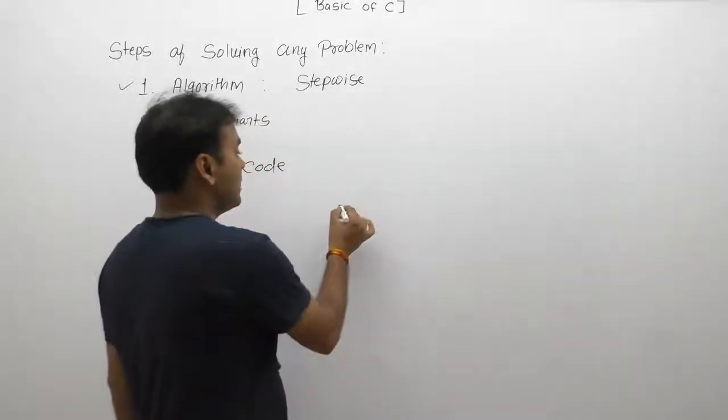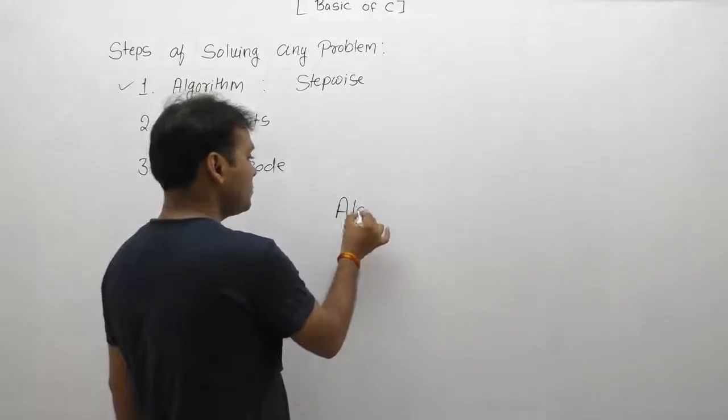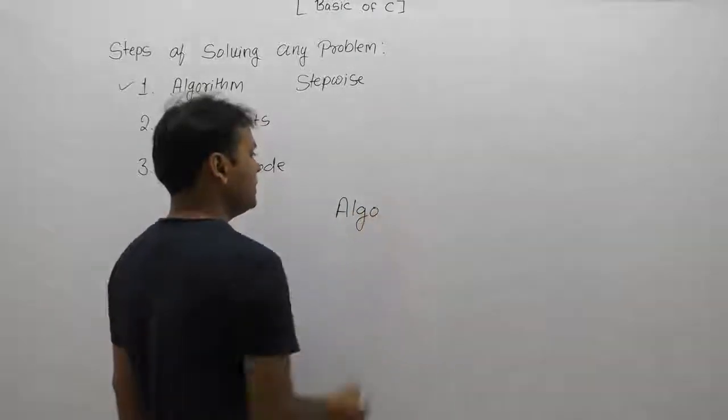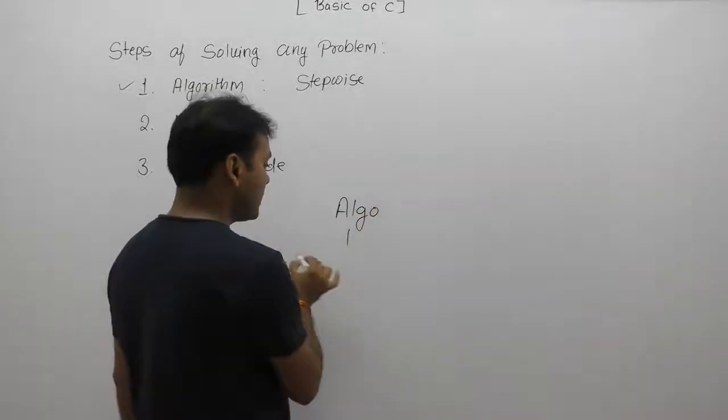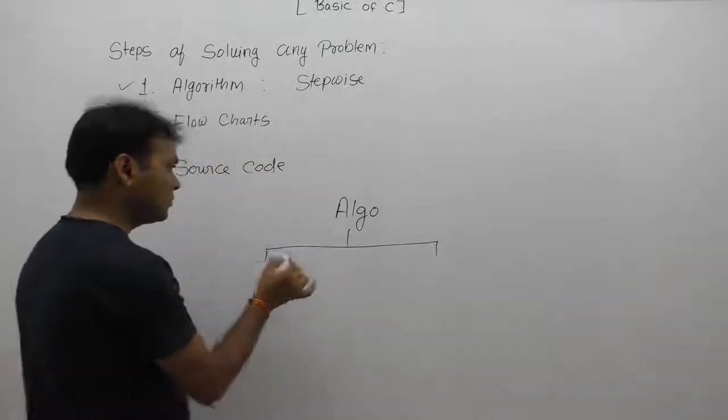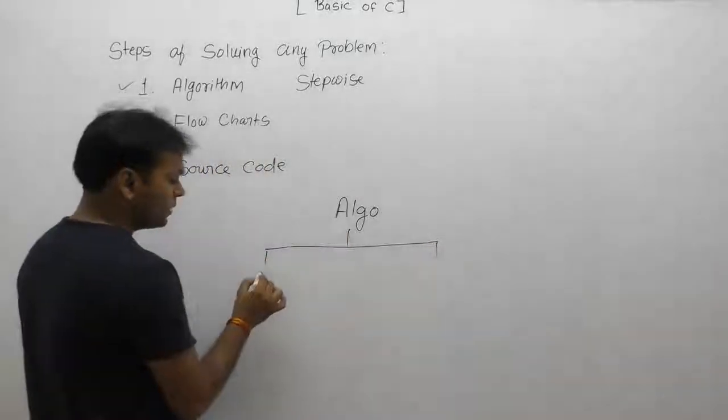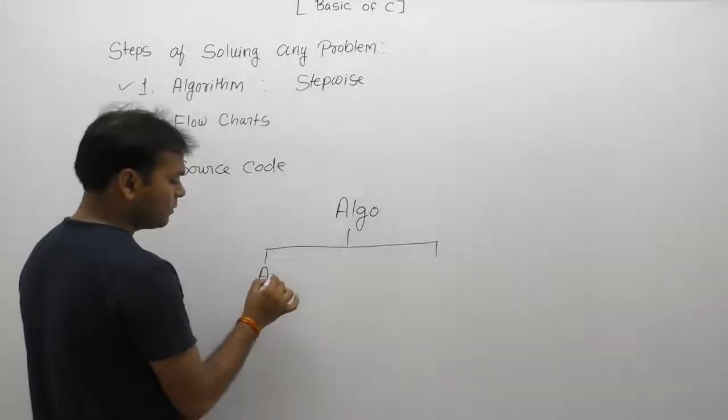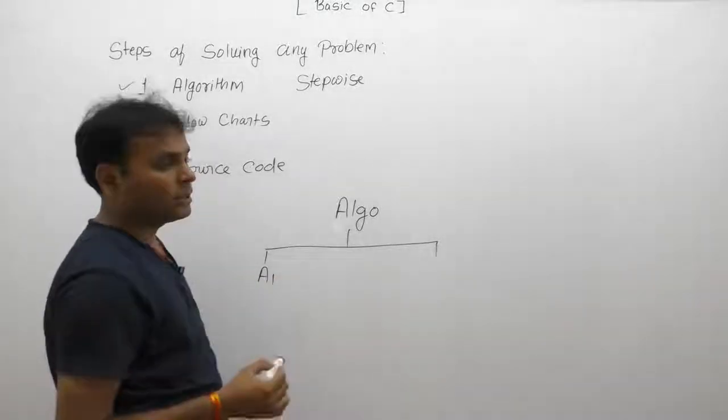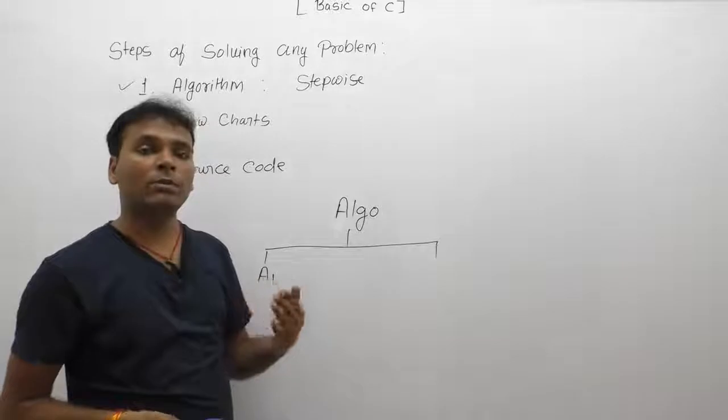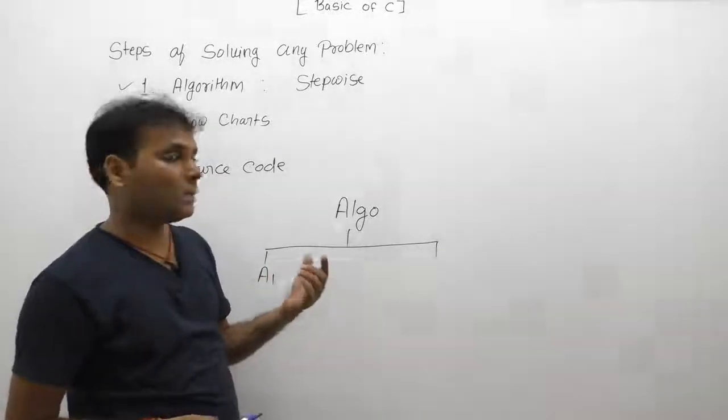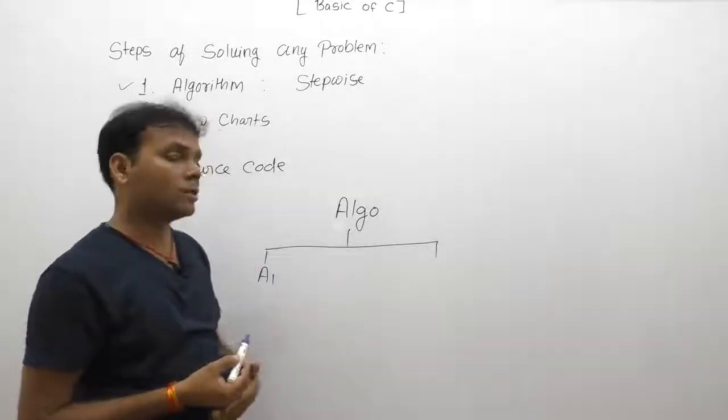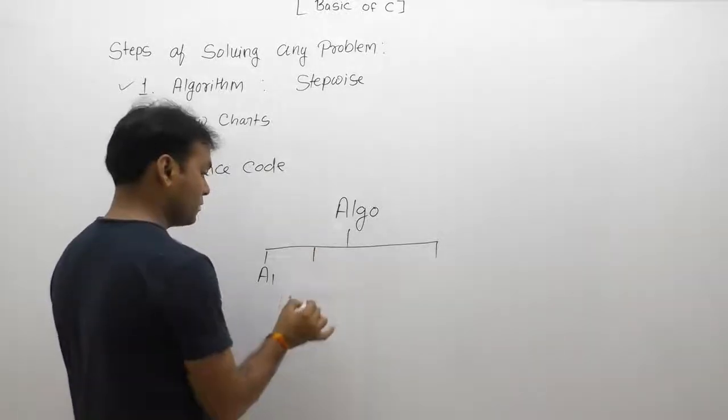We have some problem and want to create an algorithm. There may be a chance of multiple solutions for that problem. We provide solution one in the form of algorithm one. Algorithm is nothing but a solution of any problem in step-wise form. We write algorithms in our own language, not a programming language - step-wise solution.